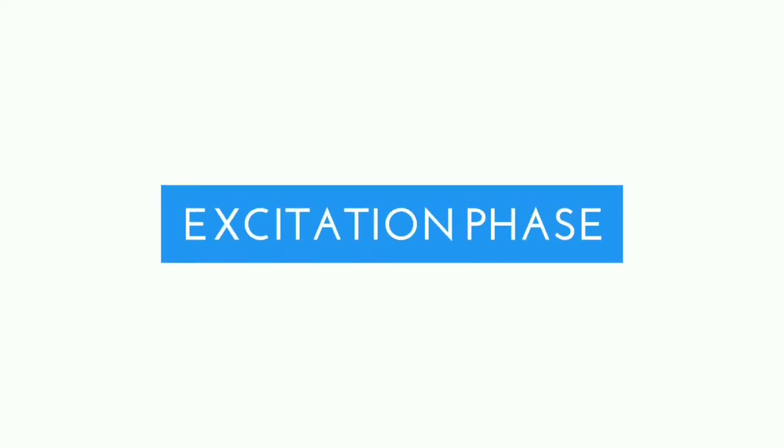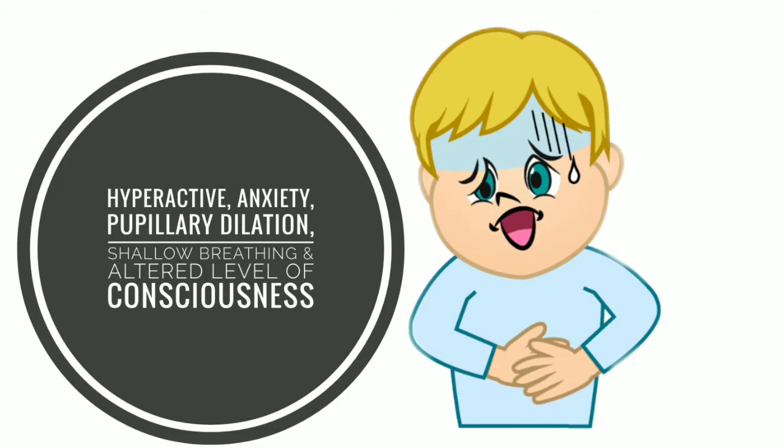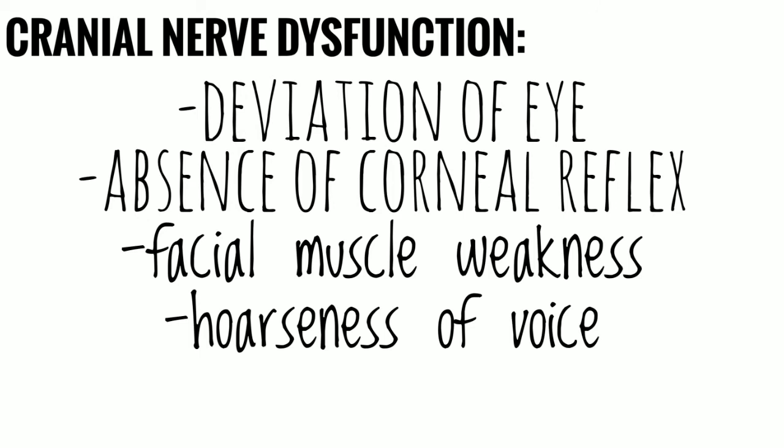The excitation phase comes after 2 to 10 days of the prodromal phase. In this phase, the patient will be hyperactive with anxiety, pupillary dilatation, shallow respiration, and altered level of consciousness. Cranial nerve dysfunction may cause ocular palsy, deviation of the eye, asymmetrical pupillary dilatation or constriction, absence of corneal reflex, facial muscle weakness, and hoarseness of voice. Temperature also rises to about 100 degrees Fahrenheit.